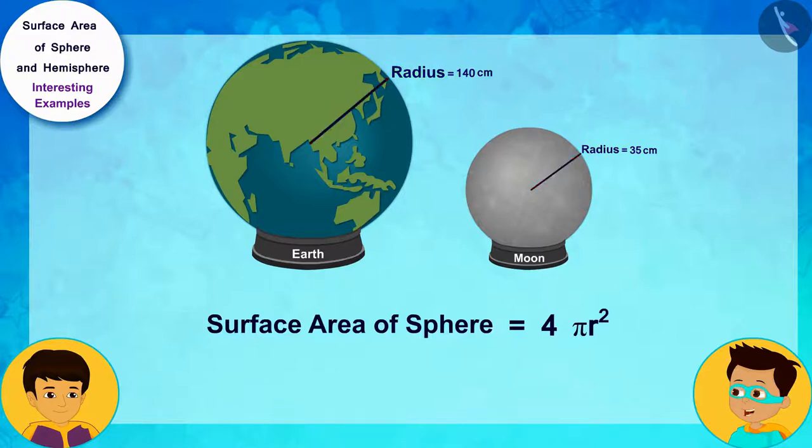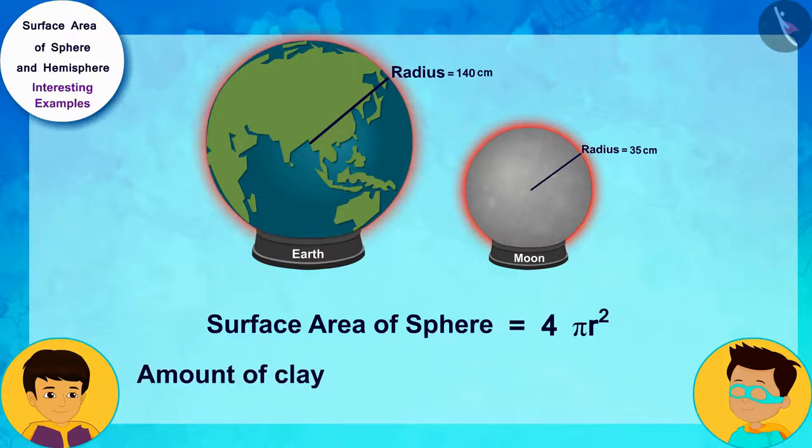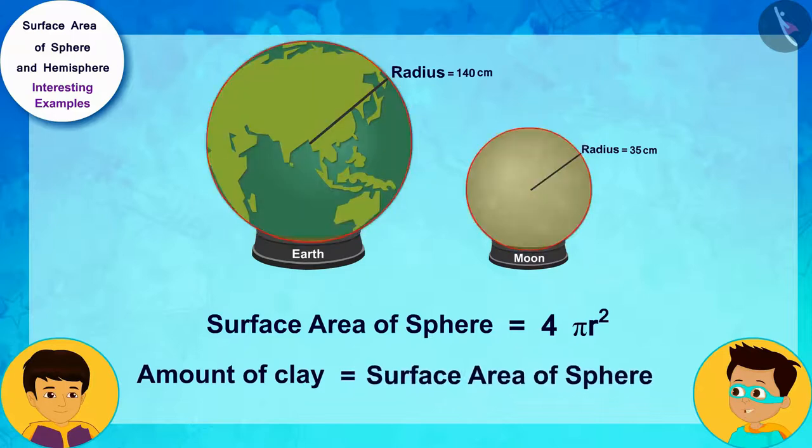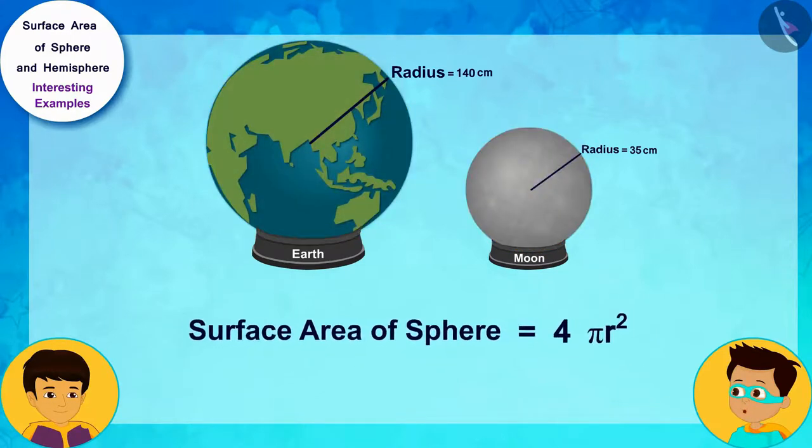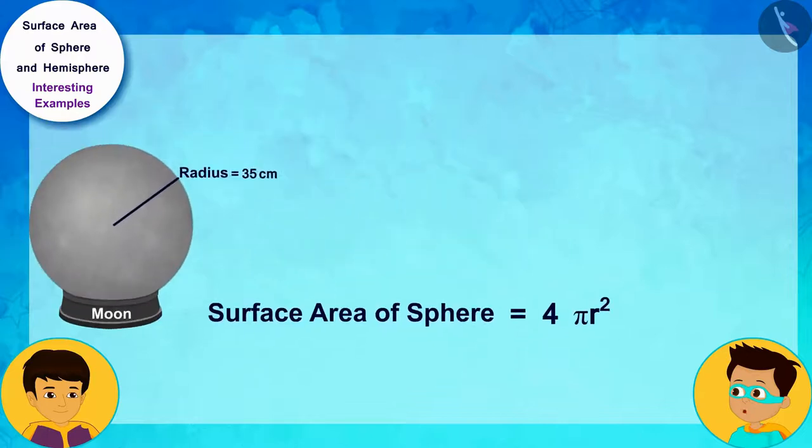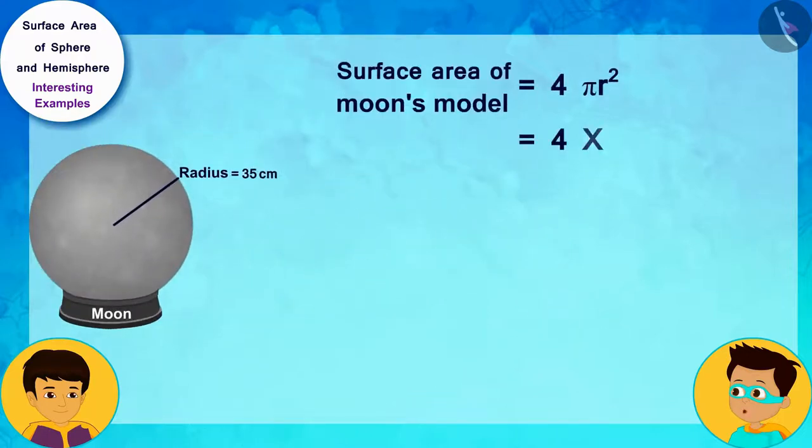And because both of these models are hollow spheres, the amount of clay used to make them will be equal to their surface areas. Let me solve this by writing the radius of the moon's model 35 centimeters instead of r first.